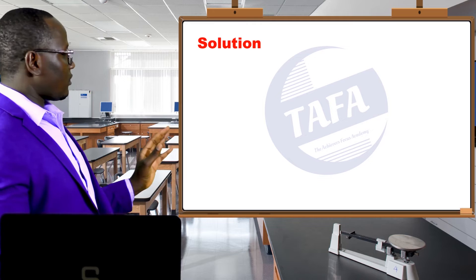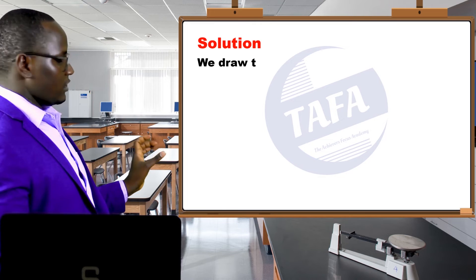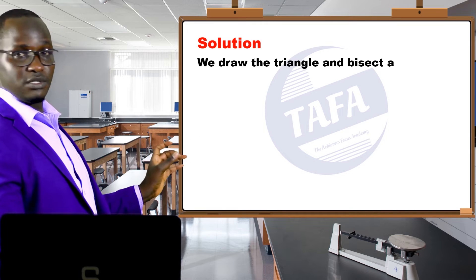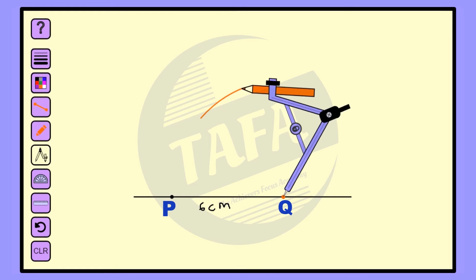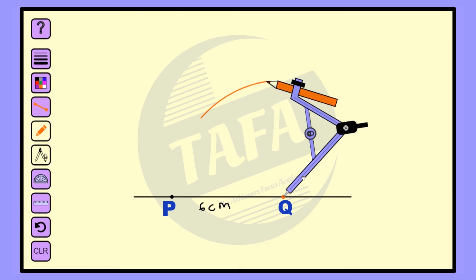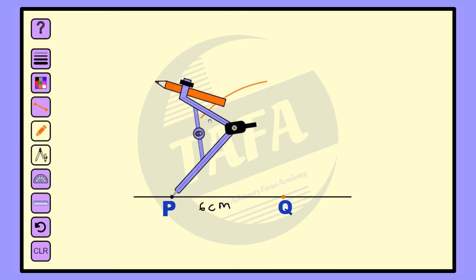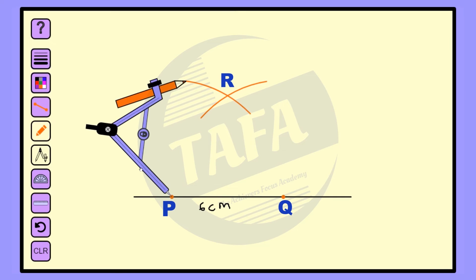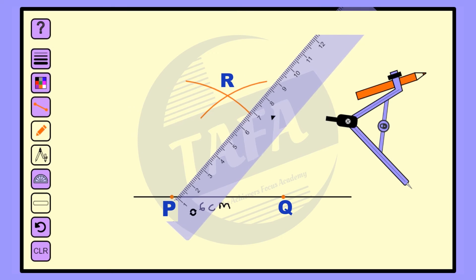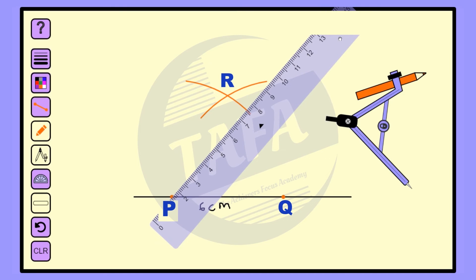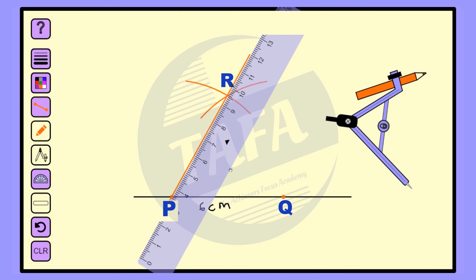The equilateral triangle has sides of six centimeters, so we draw line PQ six centimeters. With our compass, we measure six centimeters and make an arc on the upper side. Then with center Q, make an arc on the upper side so that the first arc intersects the second arc to find point R. Then join R to P and R to Q.